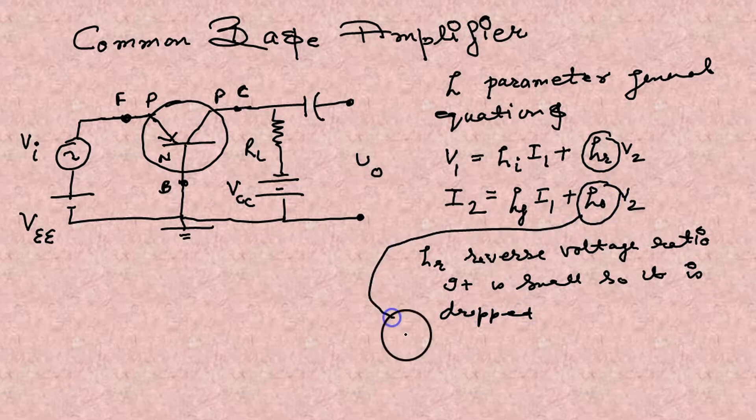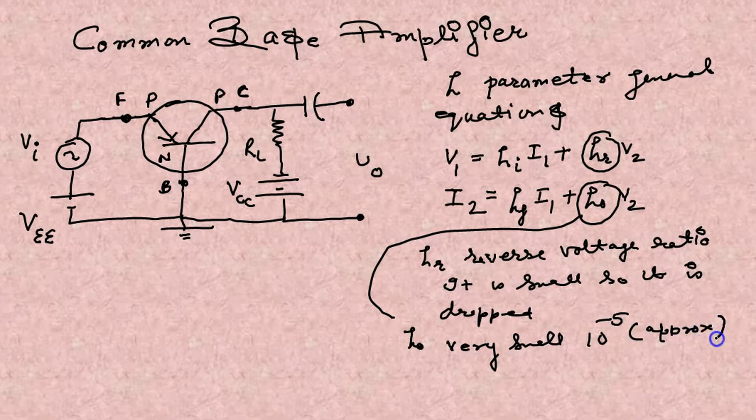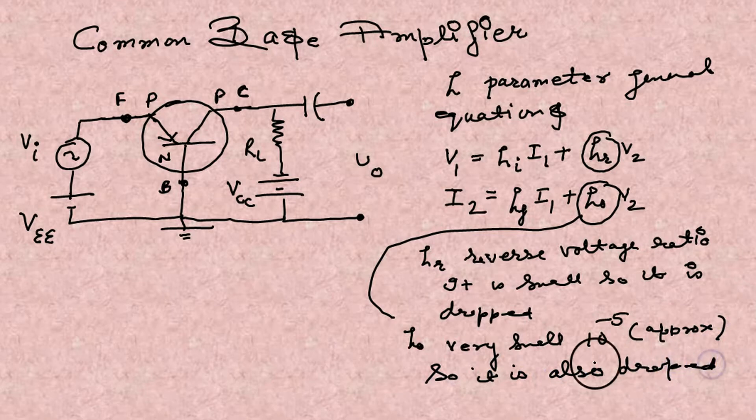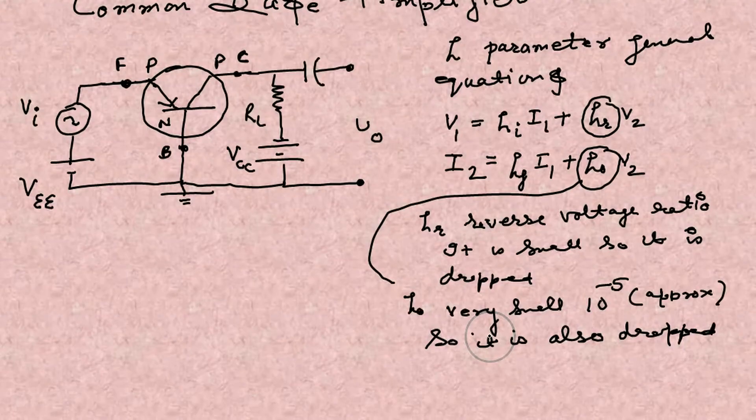Similarly HO. What is HO? This is output admittance. This again very, very small, so can be dropped or neglected. So the two factors go from the two equations.